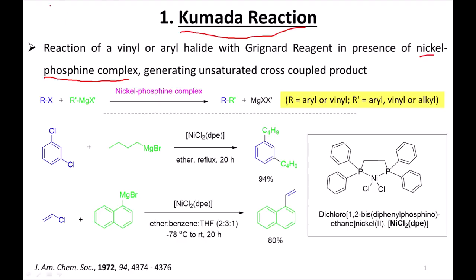One different requirement of the Kumada reaction is that Grignard reagents are required. So in this reaction we have Grignard reagents and vinyl or aryl halides. These are the basic differences of the Kumada reaction from other coupling reactions. In Suzuki we studied organoboranes, in Hiyama we studied organosilanes — all palladium-catalyzed. In Sonogashira we required simple alkynes and aryl or vinyl halides along with copper as an oxidant. Here we use a Grignard reagent and vinyl or aryl halide.